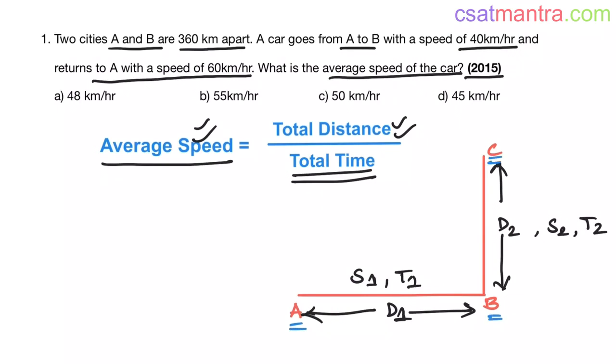The distance between A and B is d1, and the distance between B and C is d2. You are traveling from A to B with speed s1 in time t1, from B to C with speed s2 in time t2. Now what would be the average speed? That equals total distance. What is the total distance? d1 plus d2. What is the total time? t1 plus t2. So average speed equals d1 plus d2 by t1 plus t2.